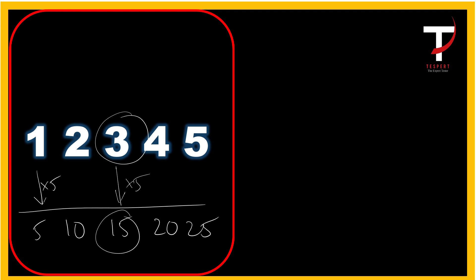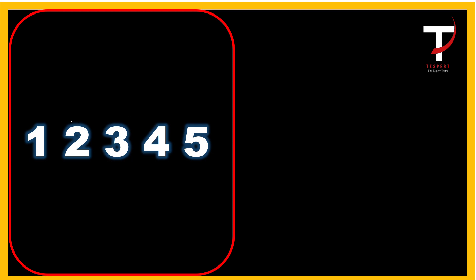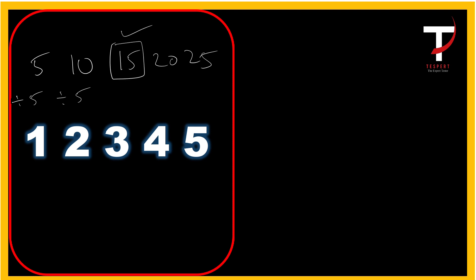When we multiply each term by 5, the average goes from 3 to 15 — it also gets multiplied by 5. So multiplying all values by a quantity X also multiplies the average by X. For division, take 5, 10, 15, 20, 25 and divide each by 5; we get 1, 2, 3, 4, 5. The average goes from 15 to 3, so dividing all values by X also divides the average by X.